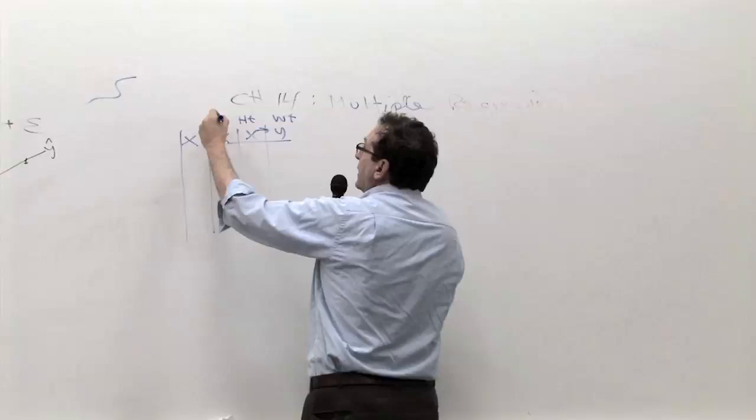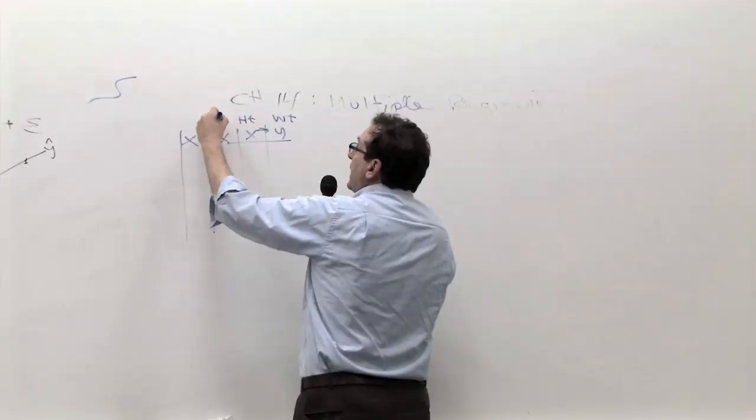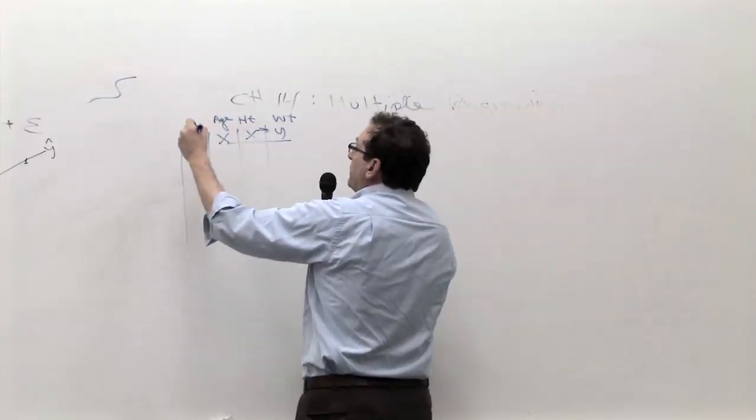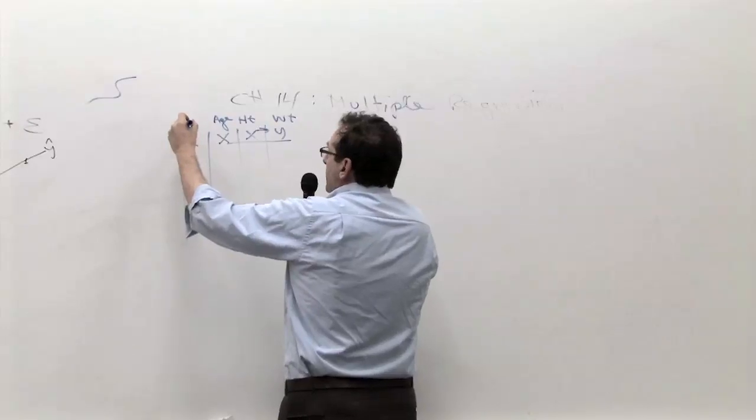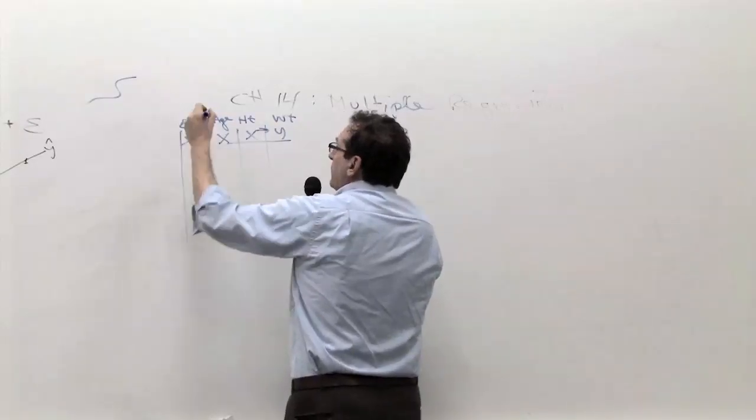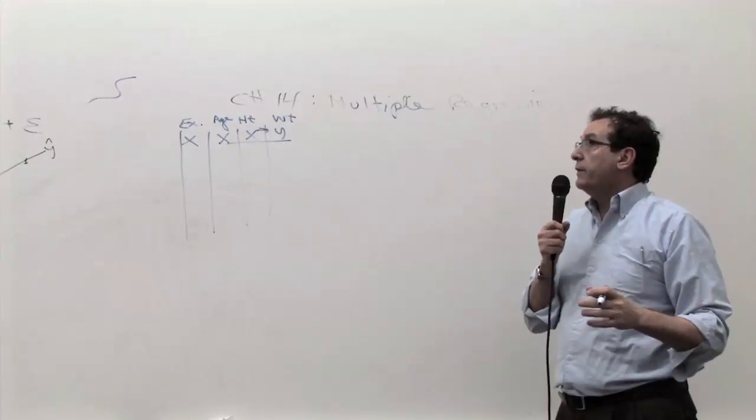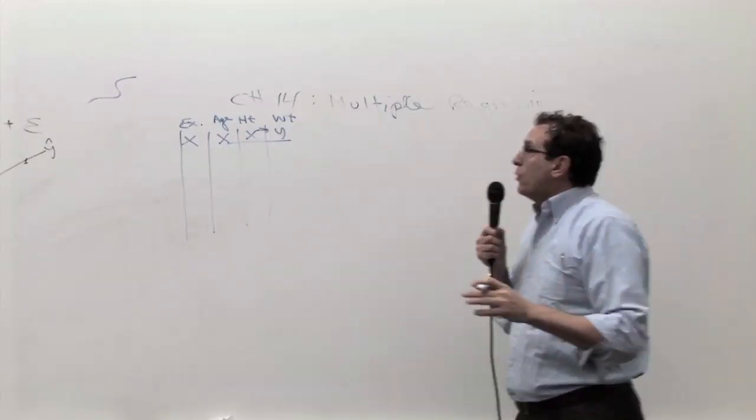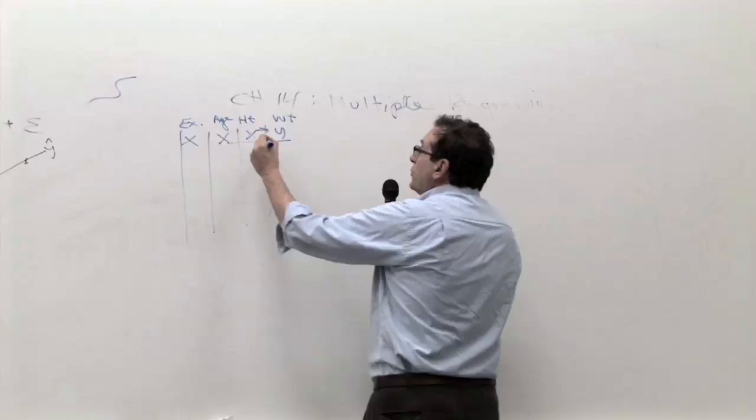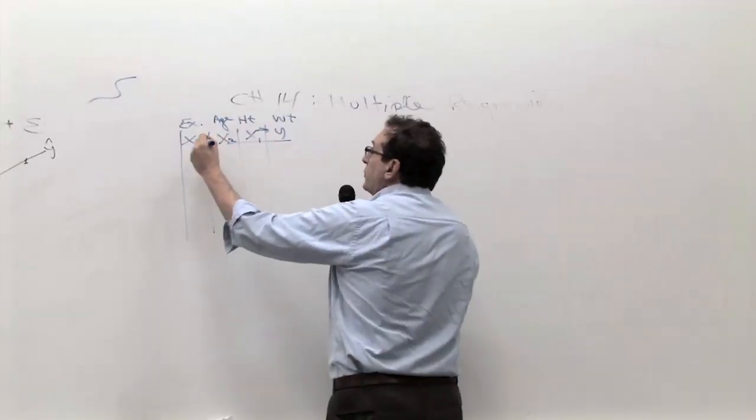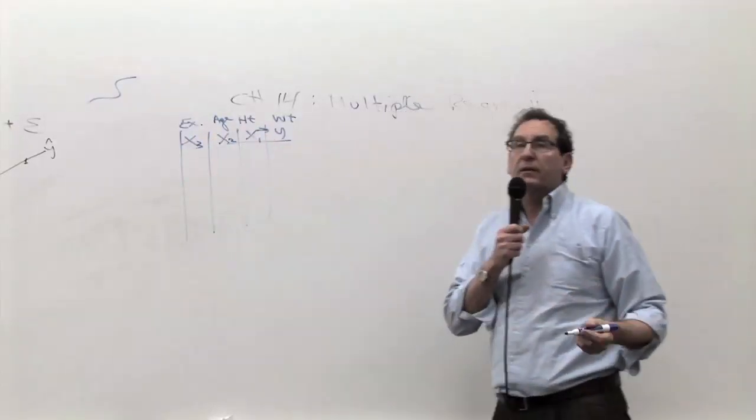For example, x could be somebody's height, another x could be somebody's age, another thing could be the amount of exercise that they do, it could even be the sex, you could put a one and a zero for female and male. But of course, in order to distinguish the x's, we're going to call this one x1, this one x2, and this one x3, just to differentiate them.